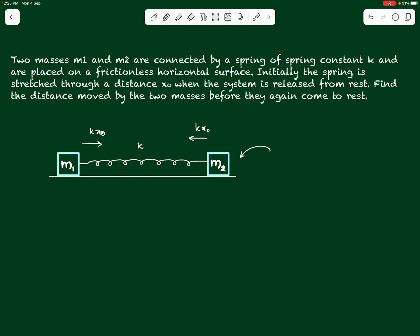If both blocks move — m1 moves a distance x1 and m2 moves a distance x2 — then at any point in time the force acting on the two blocks comes from the spring, which, if we consider the two blocks and the spring as a single system, becomes an internal force. The forces k*x acting on each of the blocks will be equal and opposite at any point in time.